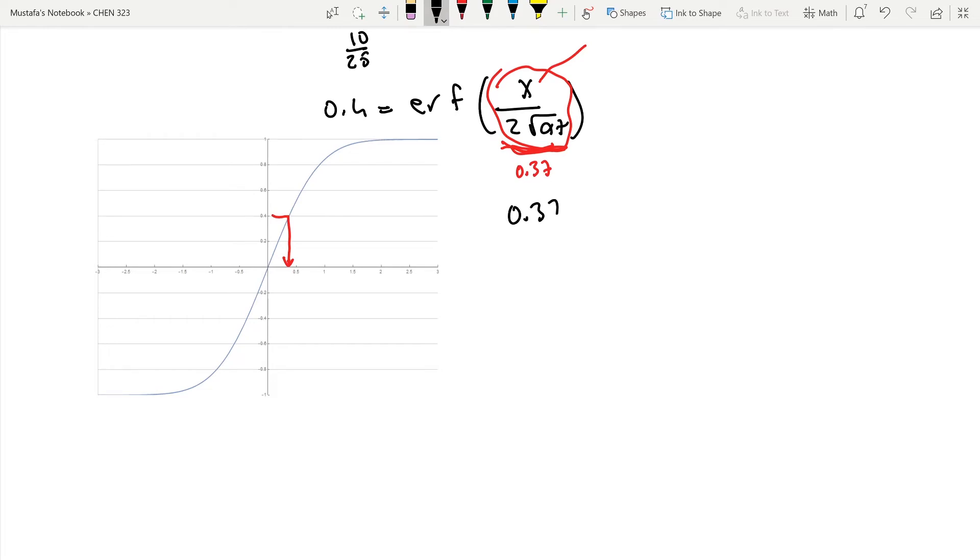So that means 0.37 is equal to X times 2 alpha T in square root. Alpha was given, it was 0.15 times 10 to the minus 6 meter square per second. T is 3 months - 3 months, 30 days, 24 hours, 60 minutes, 60 seconds. So we have 7.8 times 10 to the sixth seconds.